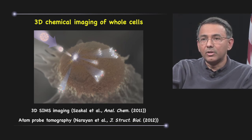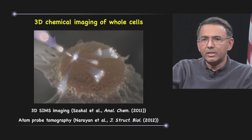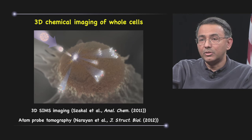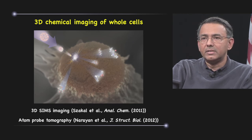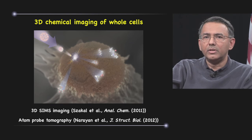And using secondary ion mass spectrometry and a method called atom probe tomography, we're taking some beginning steps towards mapping the chemical gradients present within mammalian cells that have been actually freeze-dried, but without any stains or fixatives.